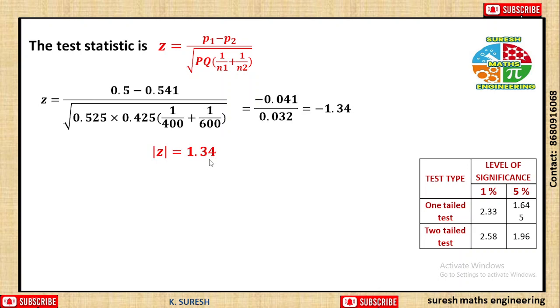Z test gives us a negative value, so we take modulus to get positive value of 1.34. Next, we find the table value. The tabulated value of z at 5% level of significance for a two-tailed test is 1.96.